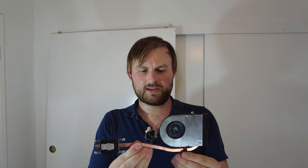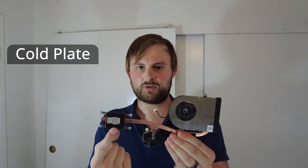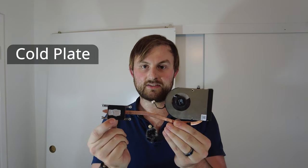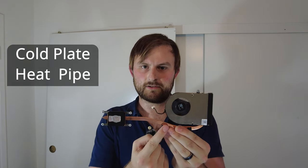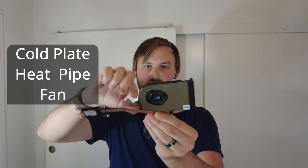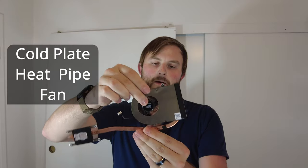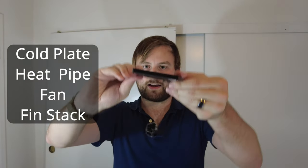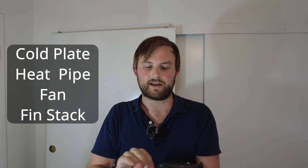So there's four main parts of this. We've got the cold plate or the hot plate that actually contacts the CPU, the heat pipe, which is this lovely copper color, the fan, which is the part that's actually bad. You can see it's super thin, super low profile, and the fin stack, which is the actual exhaust of the laptop.